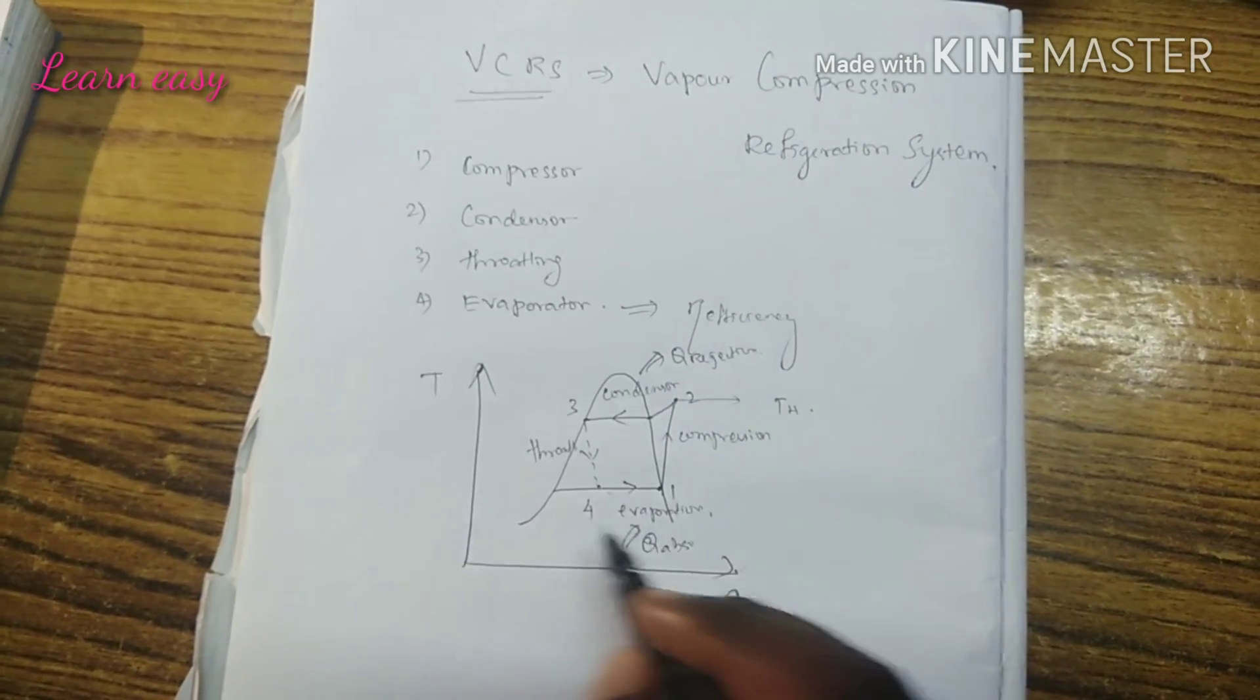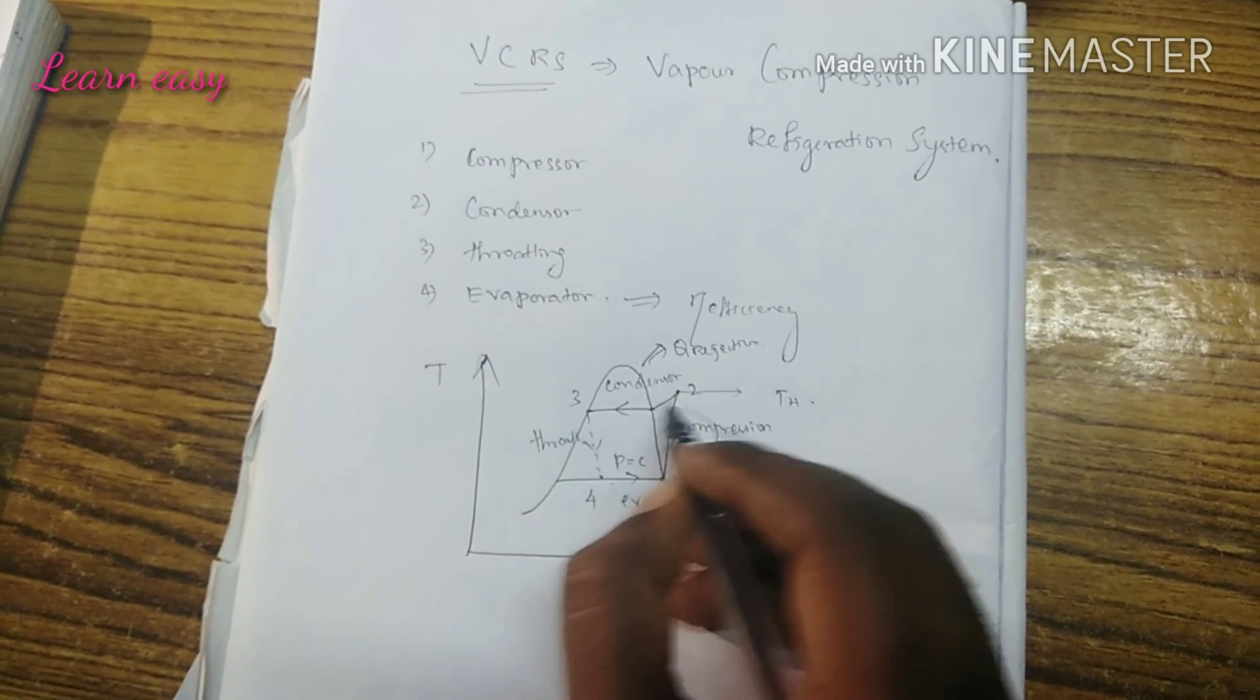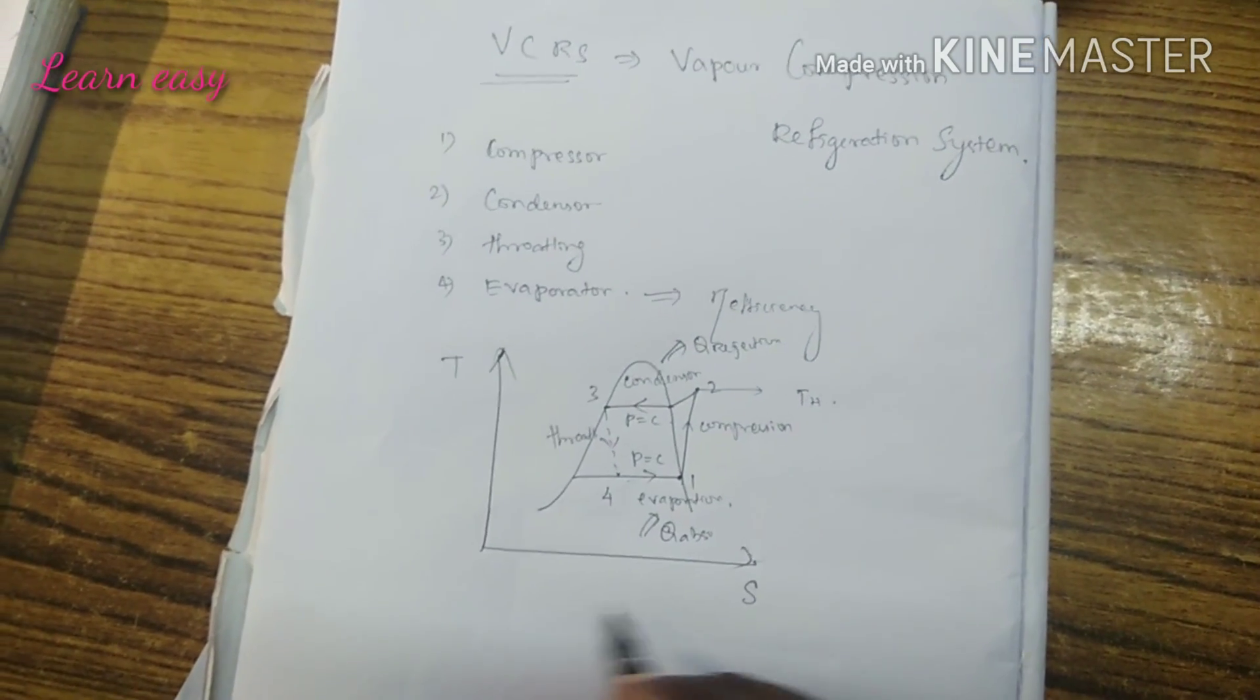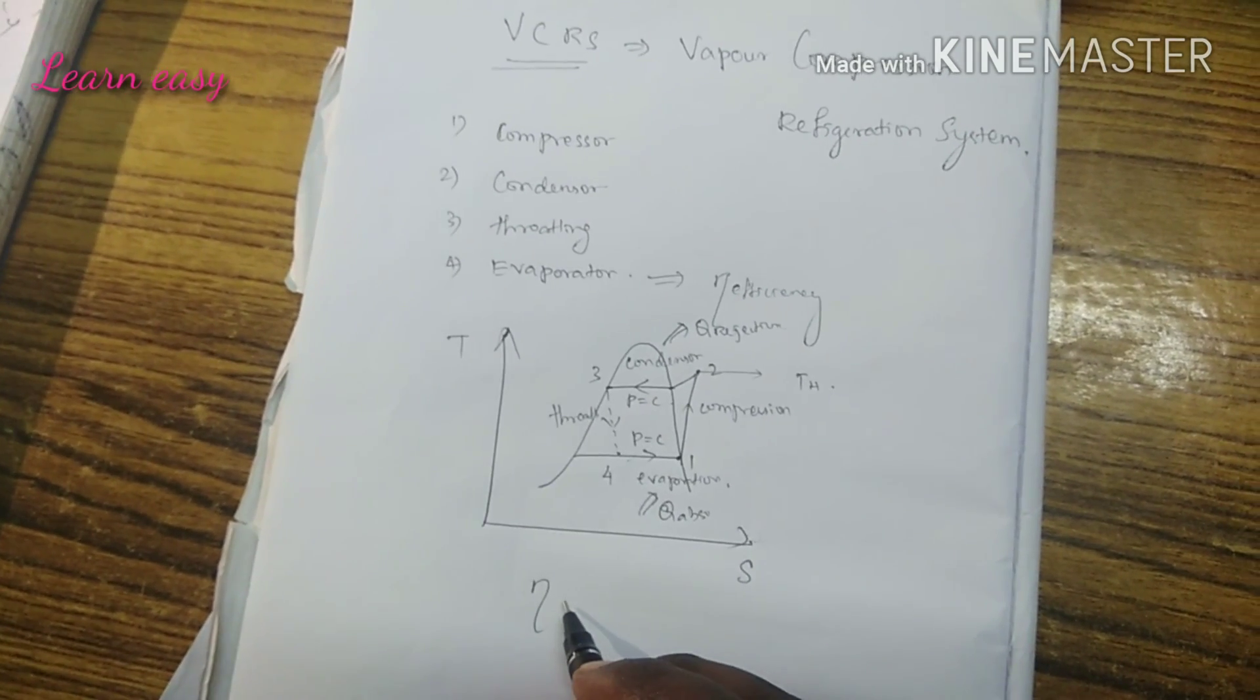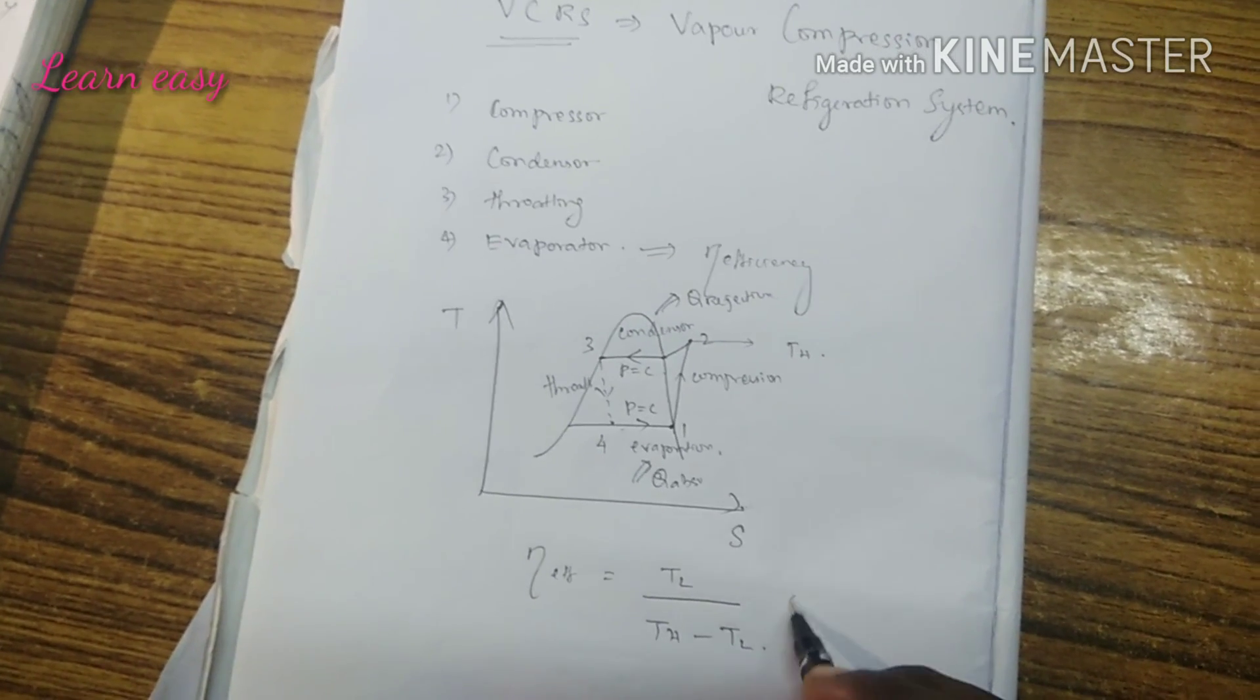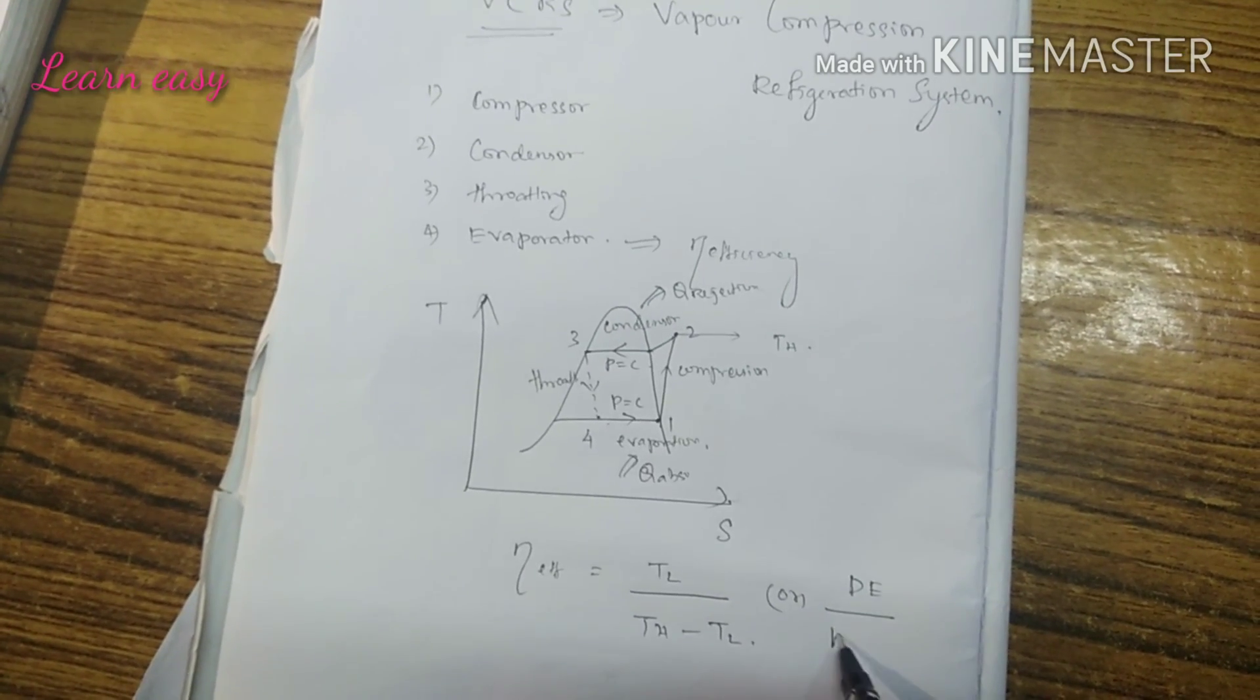From 4 to 1, pressure is constant. Likewise, from 2 to 3, pressure is also constant. The efficiency formula is: efficiency equals T lower divided by T higher minus T lower, or alternatively, desired effect divided by work input.